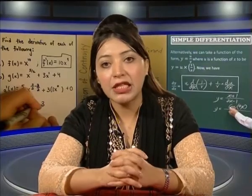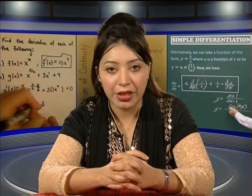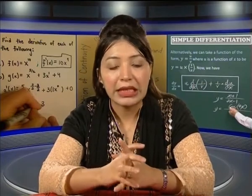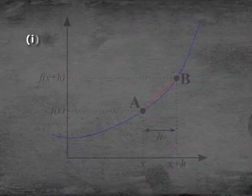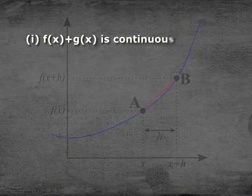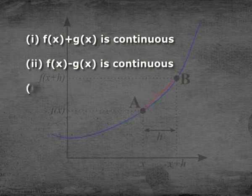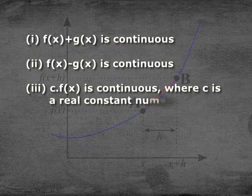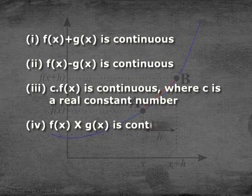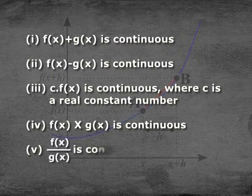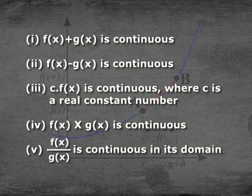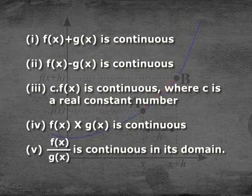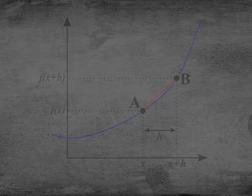If f(x) and g(x) are two continuous functions at a point or in an interval, then the following hold: f(x) + g(x) is continuous; f(x) − g(x) is continuous; c·f(x) is also continuous where c is a real constant; f(x)·g(x) is also continuous; and f(x)/g(x) is continuous in its domain.